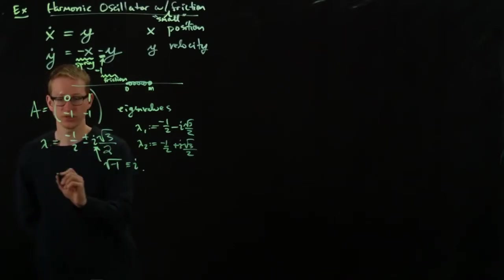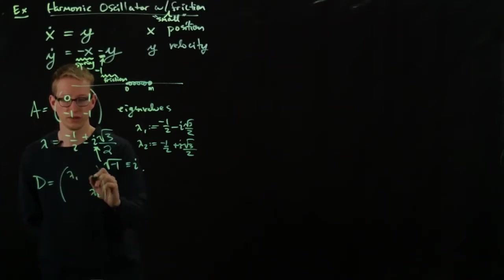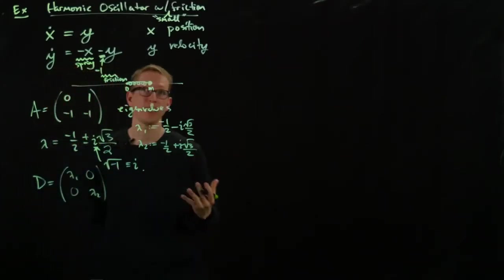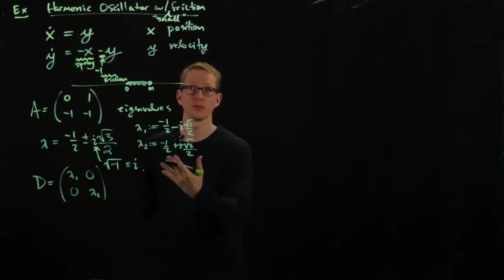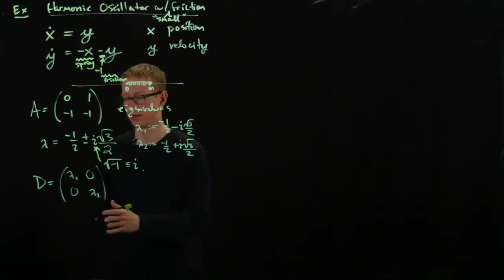And so the diagonal matrix that we're going to write down, I've put them in this order so that it's lambda 1, lambda 2. The way you diagonalize a matrix depends on the order in which you put these eigenvalues. So you might get a different similarity transformation S than I will.